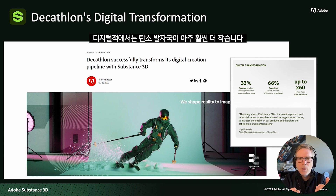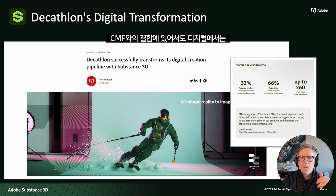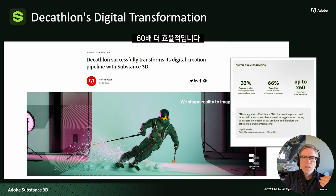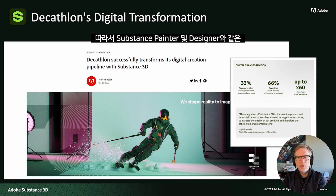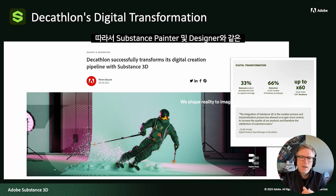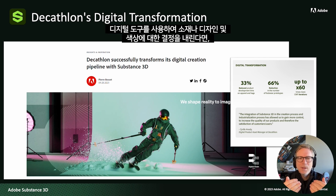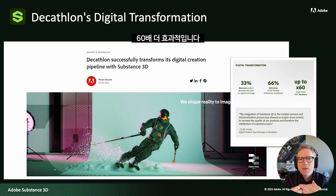Digitally, the carbon footprint is way, way smaller. They're also 60 times more efficient with more iterations on CMF — color, material, and finish. When making decisions on materials and colors, you can get 60 times more iterations using digital tools like Substance Painter and Designer.